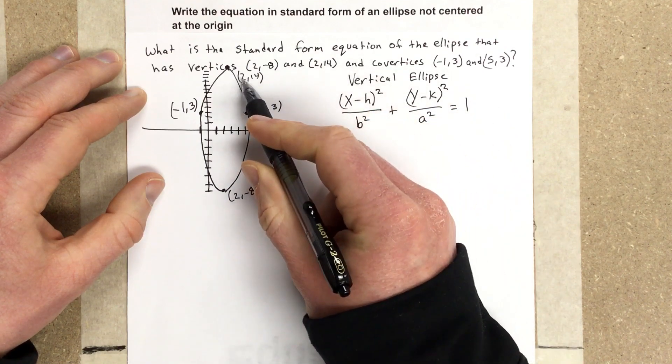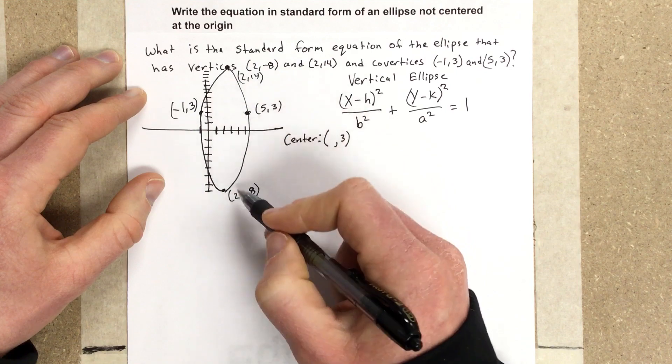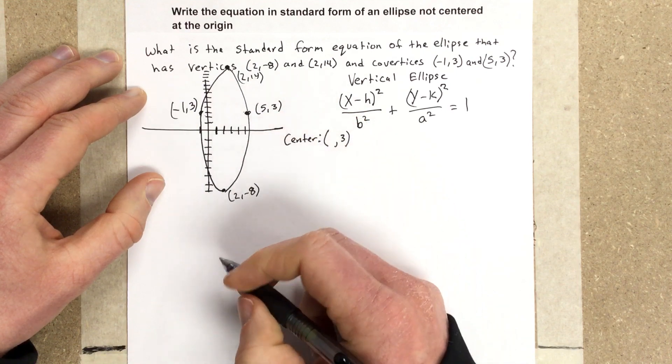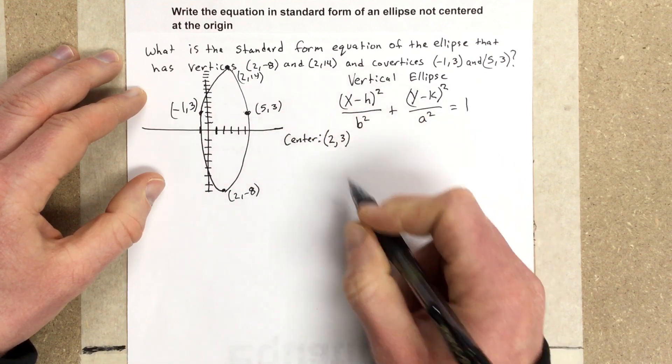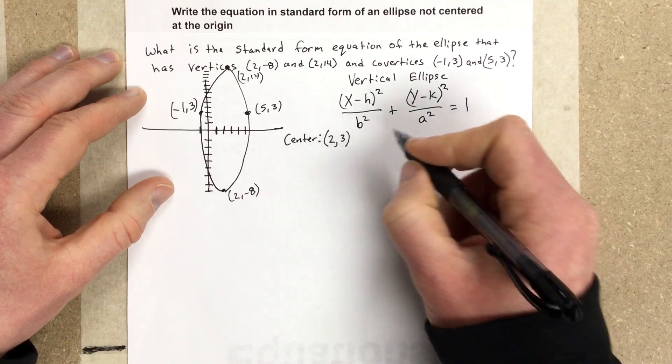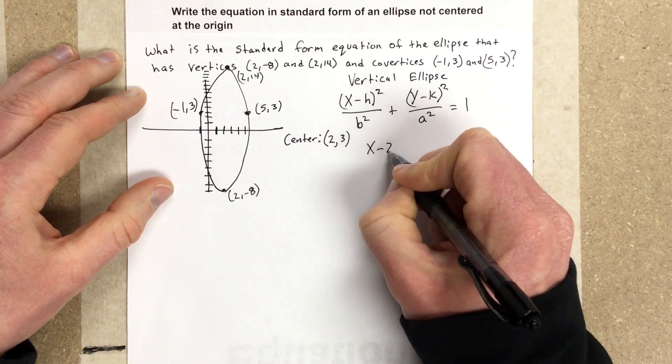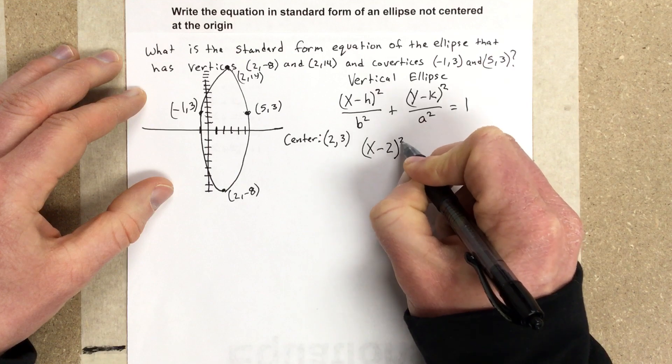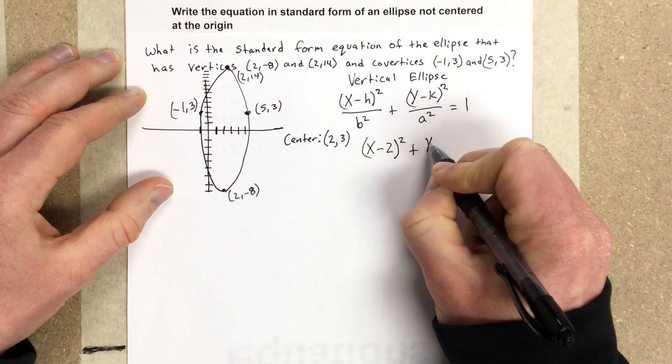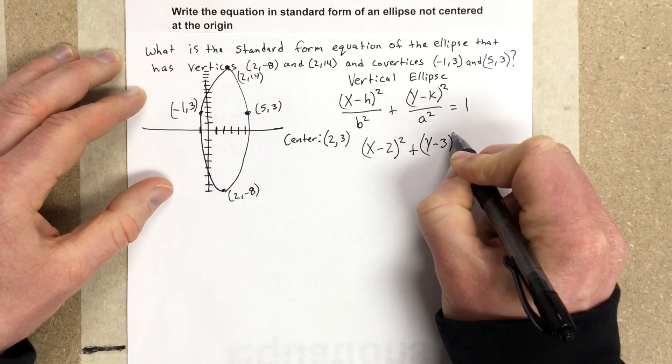And the vertices give us the x-value of the center, which would be 2. So we have a center at (2, 3), which tells us that we have (x - 2)² plus (y - 3)².